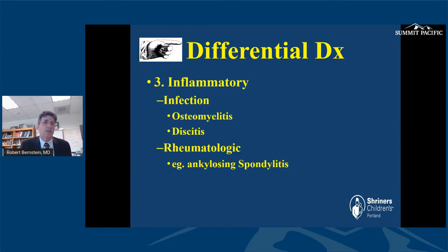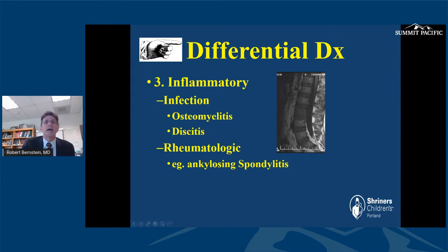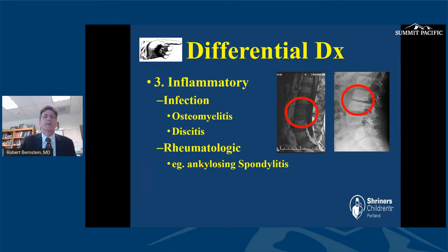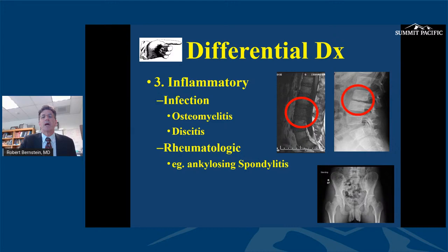There are also inflammatory causes such as infection — a child can have osteomyelitis or discitis — and rheumatologic causes such as ankylosing spondylitis. One patient had diabetes and osteomyelitis at the L3 vertebral body with back pain as her major complaint. Discitis is a form of osteomyelitis where the end plates and disc space get infected, causing disc collapse. Another young man had increased sclerosis of his sacroiliac joints and was found to have ankylosing spondylitis.